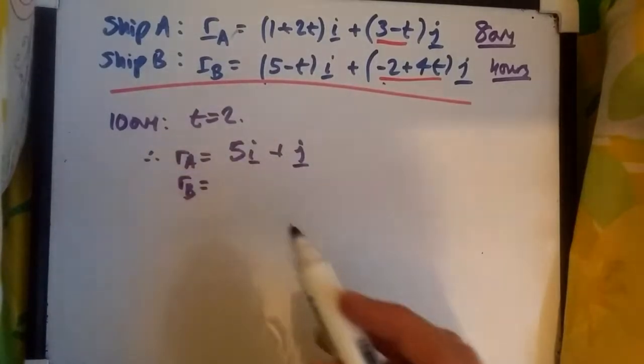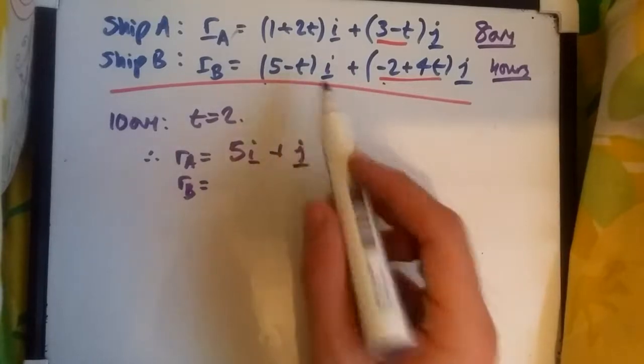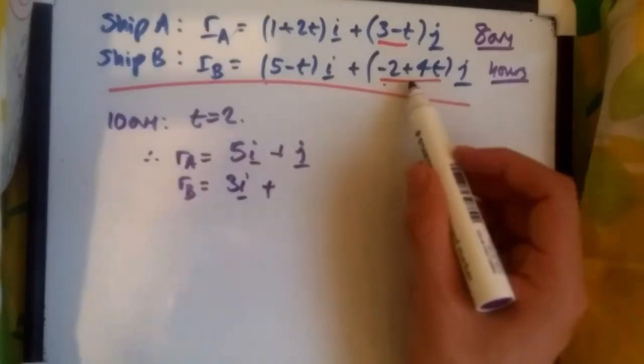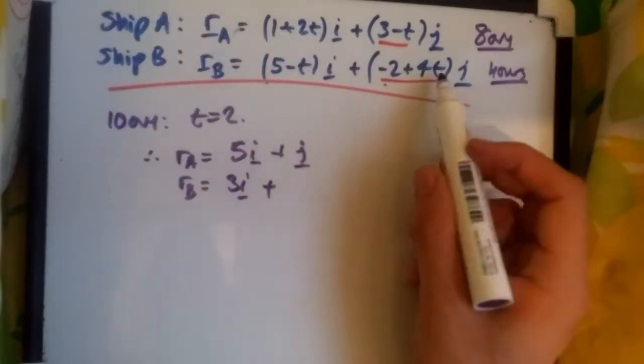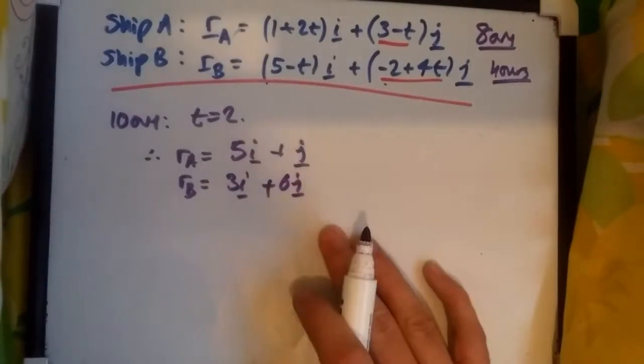Likewise, at 10 a.m. or t equals 2, the position vector of ship B should be at 5 take away 2 is 3i plus minus 2 plus 4 times 2 is 8, take away 2 is 6, so 6j.